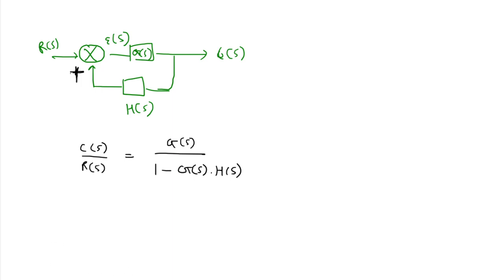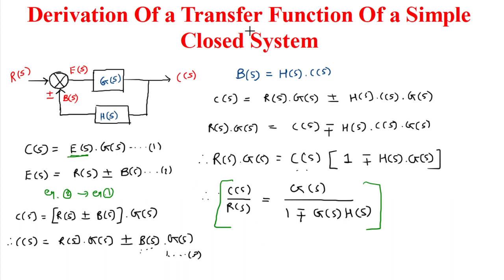If there is negative feedback, the transfer function C(s)/R(s) = G(s) / (1 + G(s)·H(s)). That is the complete derivation of the transfer function of a simple closed loop system. If you have any doubt, please comment and I will address it in the next video. Thank you very much.